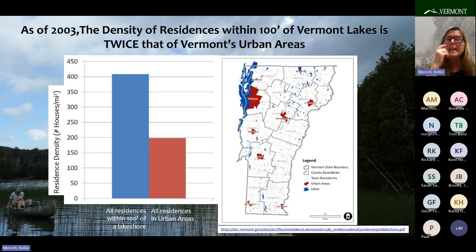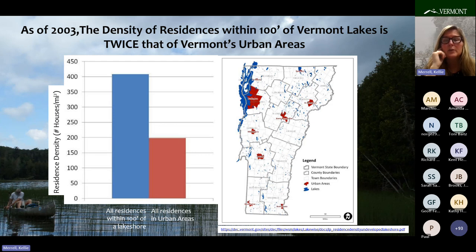As of 2003, 45 percent of lakeshores were developed, and they are densely developed — with the density of residences within just 100 feet of a lakeshore being twice that of our urban areas. Since 1970, Maine has not allowed residences to be built within 100 feet of their lakes. Meanwhile, our lakeshores have so many residences within 100 feet that the density of residences around our lakes is greater than that in our urban centers.